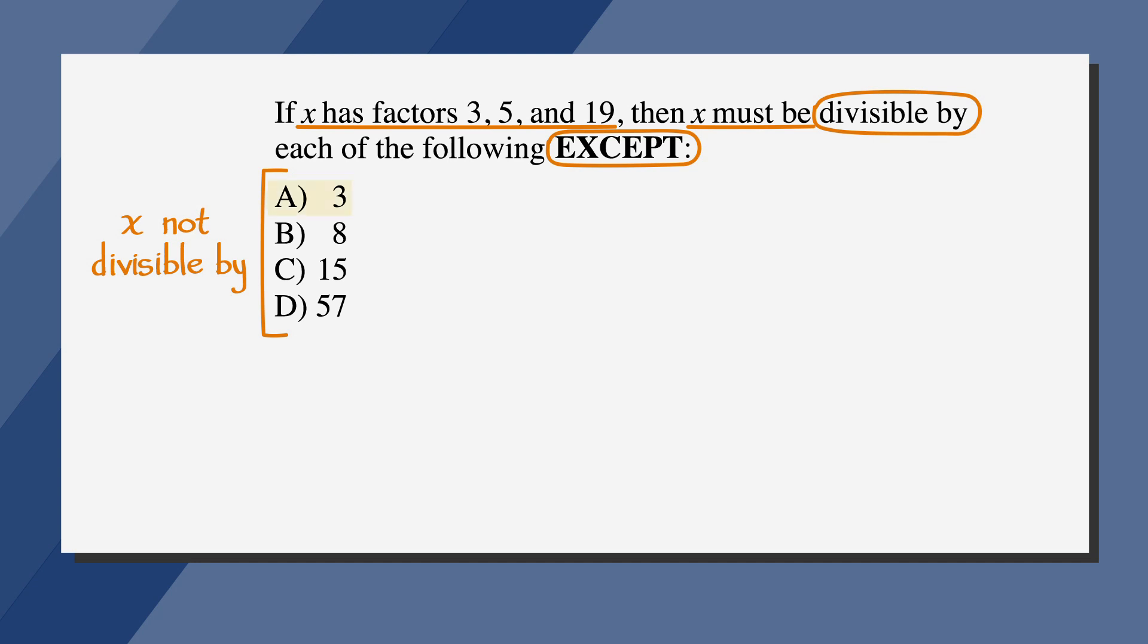Let's start with answer choice A, 3. We already know this one. Since 95 times 3 is 285, we know that 285 divided by 3 is 95. No decimals or fractions here. 285 divides evenly by 3. That means answer choice A cannot be the right answer. Cross it out.